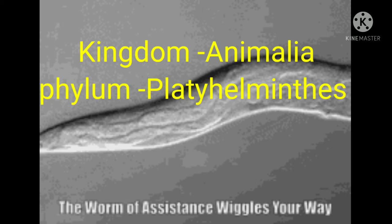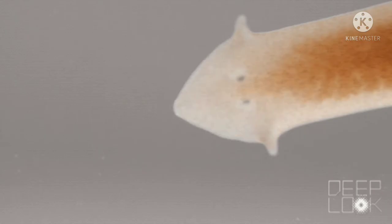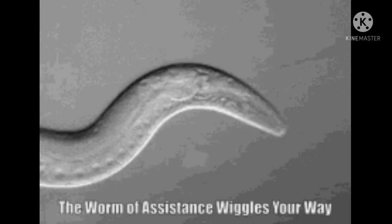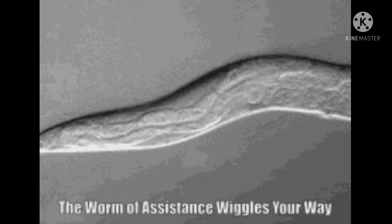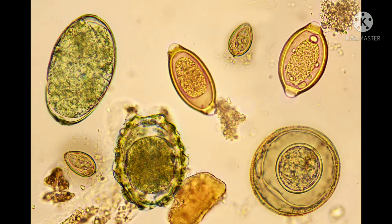The body is acoelomate and bilaterally symmetrical. These are triploblasts, meaning their body is made up of three germ layers: ectoderm, endoderm, and mesoderm. These animals are hermaphrodite, meaning male and female reproductive systems are present in the same animal body. Examples include planaria, liver fluke, and tapeworm. Liver fluke causes disease in cattle.